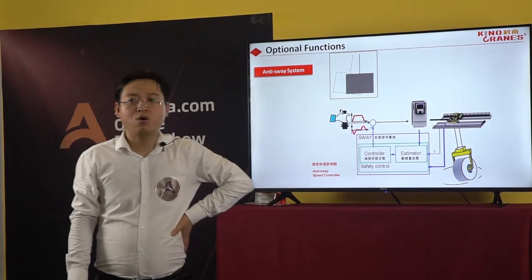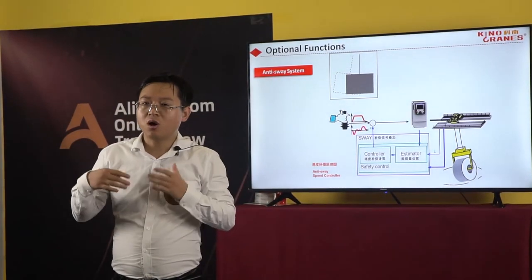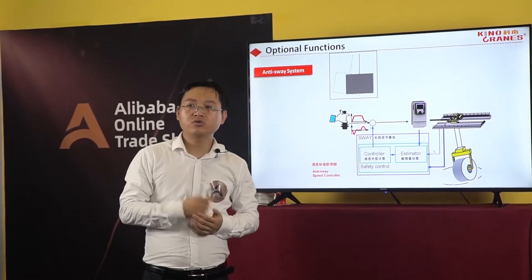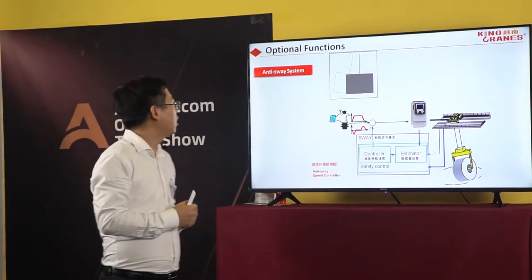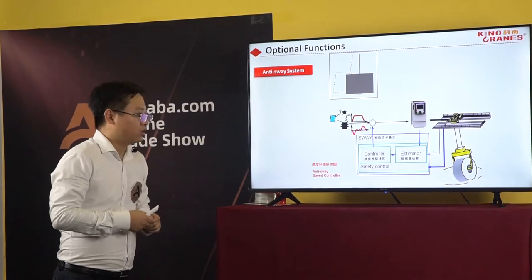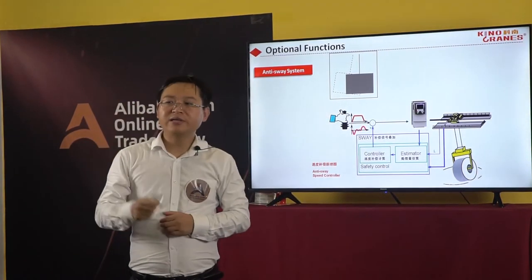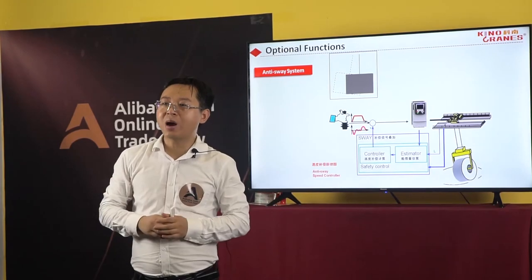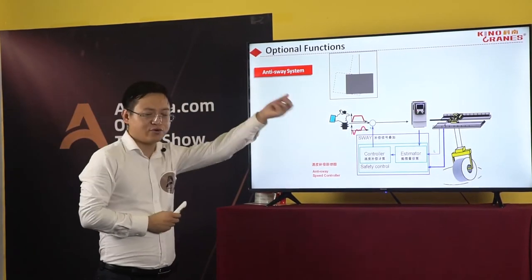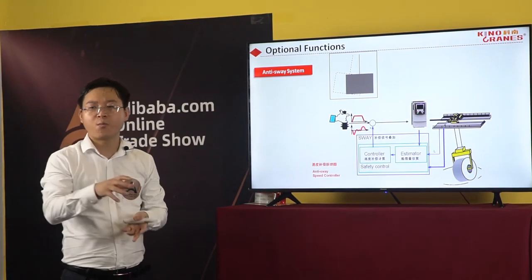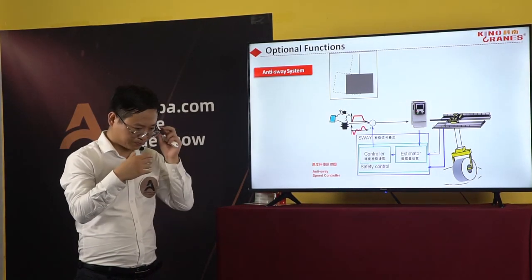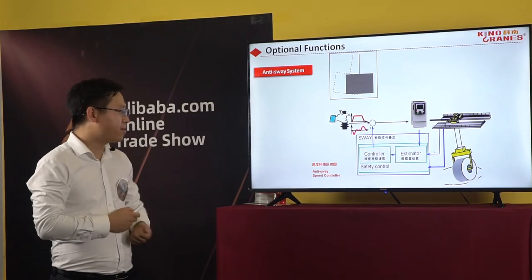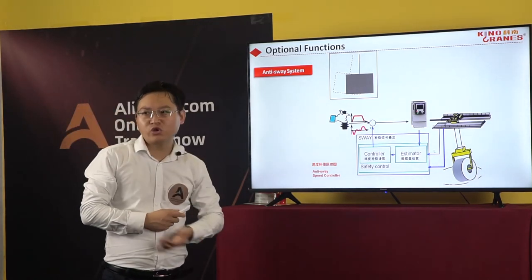Now I will introduce some optional functions. These functions are mainly used on smart cranes, also called intelligent cranes. These cranes include garbage cranes used in waste-to-energy power stations — they need some press to make waste-to-energy electric. Also paper mills and auto industrial cranes.